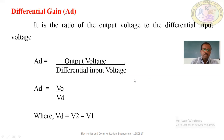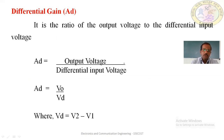The next parameter is differential gain AD. It is the ratio of the output voltage to the differential input voltage. The formula is AD = V0 / VD, where VD = V2 − V1.